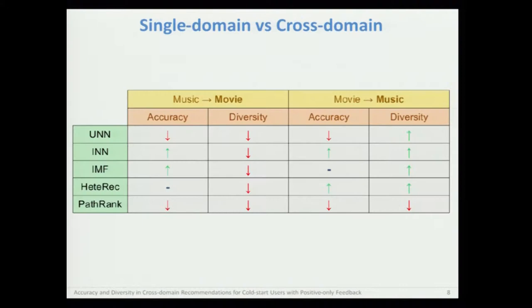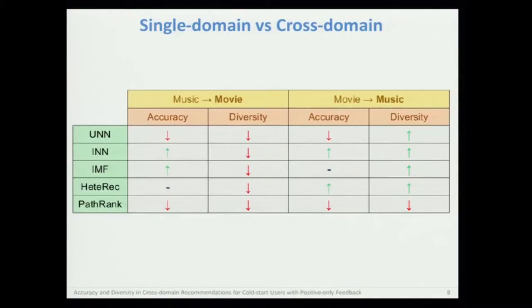Firstly, we compare the results of these methods using single-domain versus cross-domain information. In the paper there is a table with all experimental results. This slide shows only a very summarized table, where the green up arrows indicate improvements when cross-domain information is used. As we can see, there is no overall winner, and not all methods can benefit from cross-domain information — some of them can even be penalized. In particular, it is worth noting that diversity is always penalized in the movie domain when the music domain is used as the source domain. Instead, in the music domain, when movie information is also used to recommend music, diversity is almost always improved.